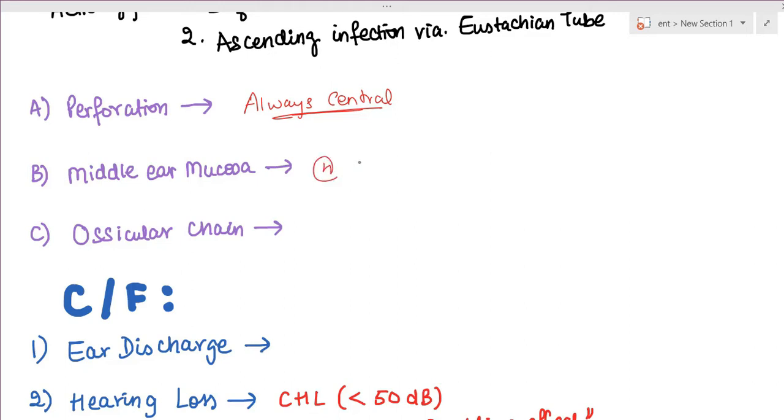The mucosa may be edematous and velvety when there is active infection. The ossicular chain may or may not be involved, so there may be some degree of necrosis present.